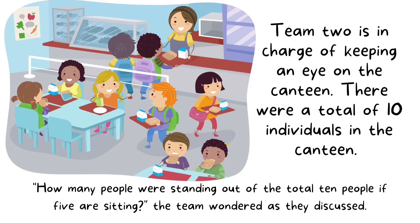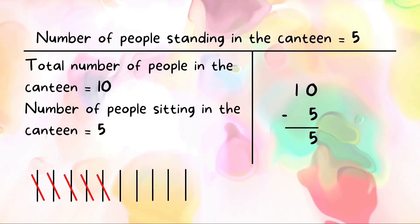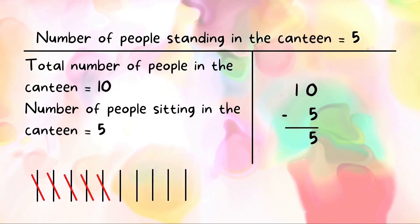Team two is in charge of keeping an eye on the canteen. There were a total of ten individuals in the canteen. The team discussed and came up with this question: how many people were standing out of the total ten people, if five of them are sitting?